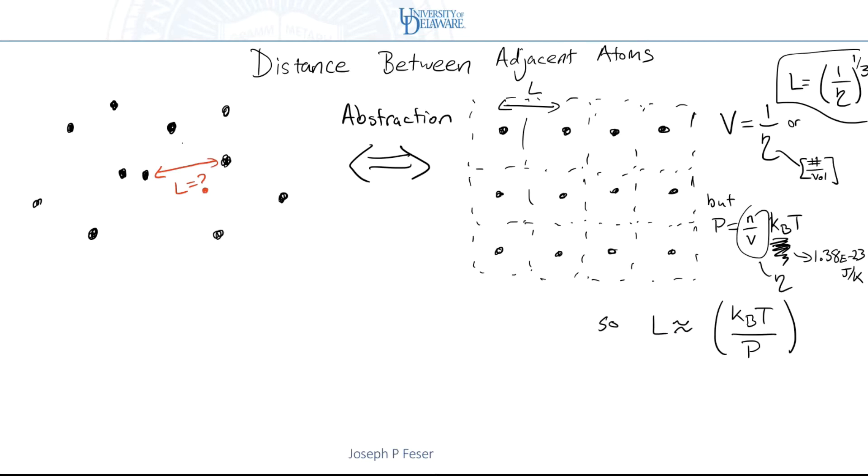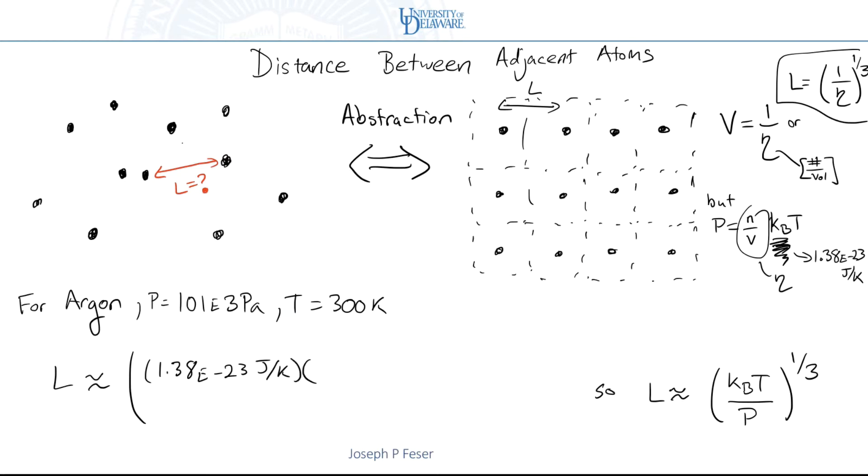Let me scootch some of this stuff down to the 1/3. I said that I was going to calculate what that was for argon. So for argon, what is the distance between atoms? I'll do that at 1 atmosphere, so that's 101 e3 pascals pressure and 300 Kelvin. If I do that at standard conditions, what I'll get is 1.38 e to the minus 23 joules per Kelvin times 300 Kelvin divided by 101 e3 pascals, take all that stuff to the 1/3. And that gives me 3.45 nanometers.